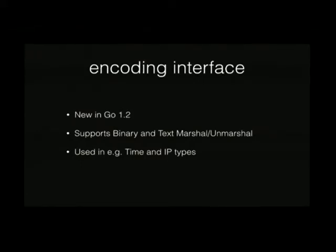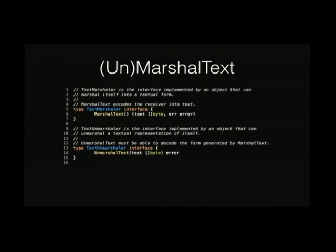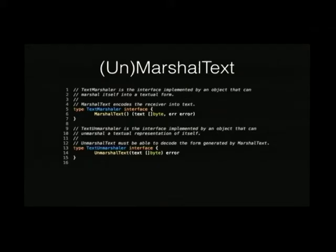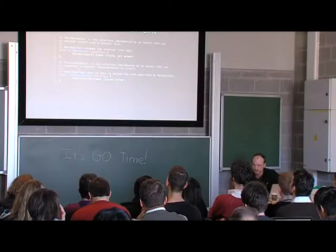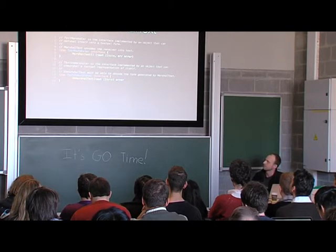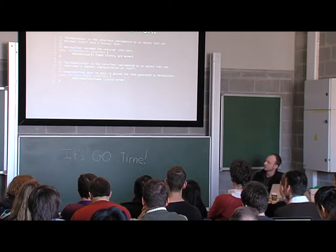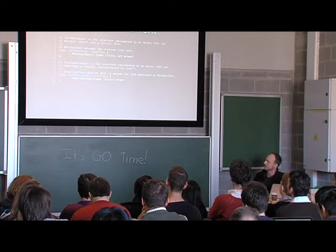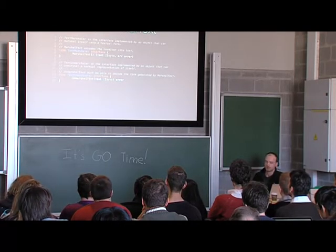Let's look at the text marshalling and unmarshalling interfaces. The TextMarshaler interface has a single method that returns bytes — obviously UTF-8 encoded. TextUnmarshaler goes the other way: it takes some bytes and fills out your object. The interesting thing about these is that there's no reference to JSON or XML, because they can be used for both. If you define these on your own types and want to produce multiple representations — JSON or XML — these are reused in the same way, so you don't need to override each handler separately.